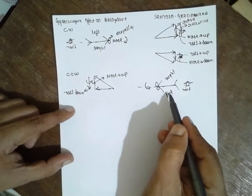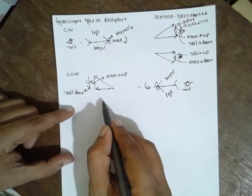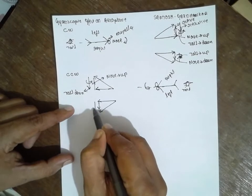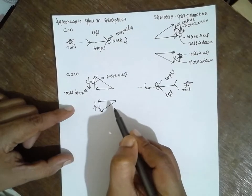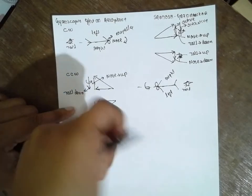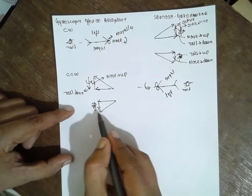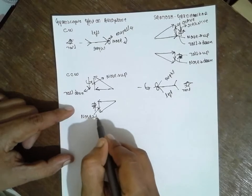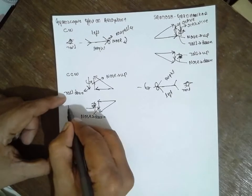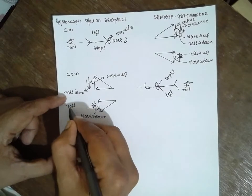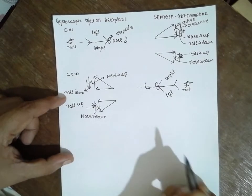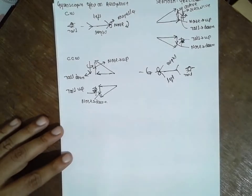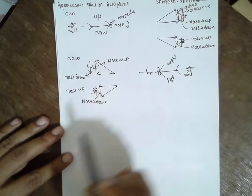Next case: when it moves towards left — same process, left, active, reactive. Holding in this direction, the arrow will be in this direction. In this case, the nose will be down and the tail will be up. That's it — all four cases are over: one, two, three, four.